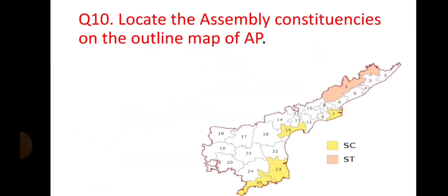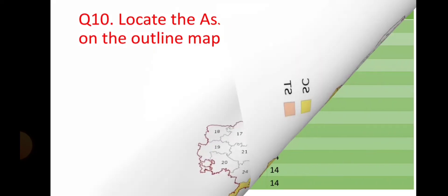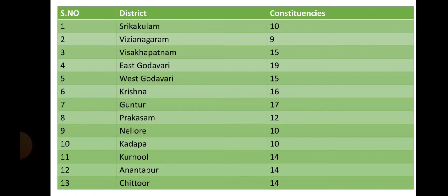Locate the assembly constituencies on the outline map of Andhra Pradesh. This is the outline map of AP showing districts and their constituencies: Krishna — 15, Guntur — 16, Prakasham — 17, Nellore — 12, Kadapa — 10, Kurnool — 14, Anantapur — 14, Chittoor — 14 constituencies.